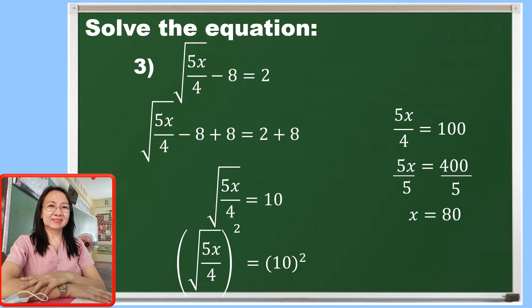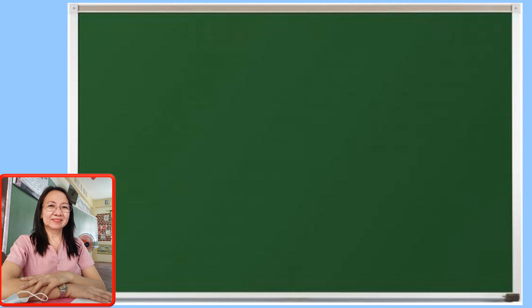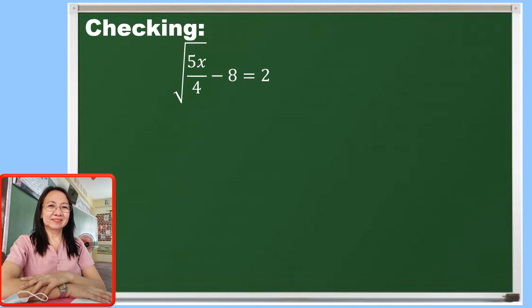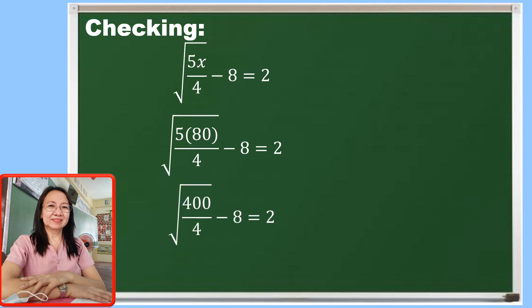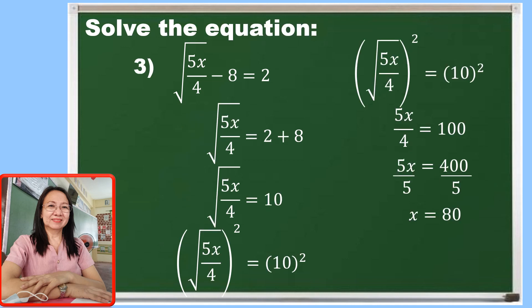So by checking in our original equation, the square root of 5x over 4 minus 8 is equal to 2. Let us substitute 80 for x. So 5 times 80 is equal to 400, divided by 4 is 100. The square root of 100 is 10, and 10 minus 8 is 2. So 2 is equal to 2. Therefore, we can say that the value of x is equal to 80.